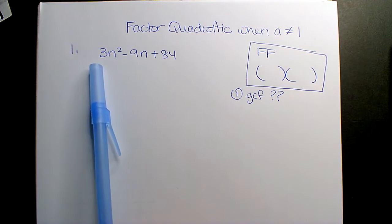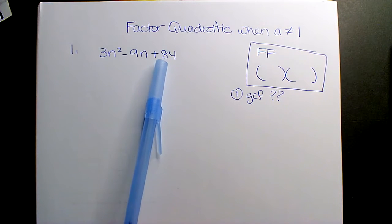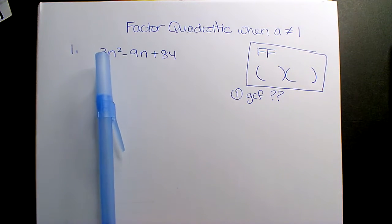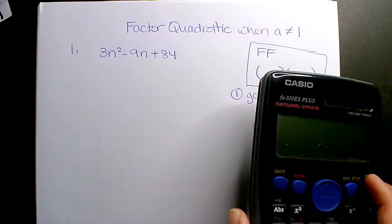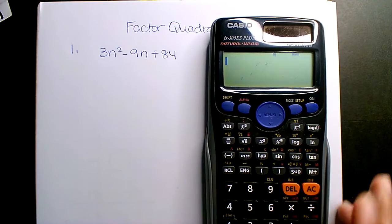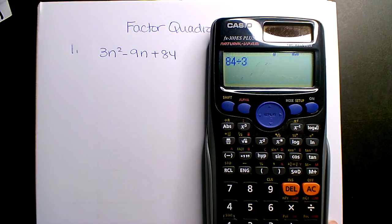Okay, 3, 9, 84. Is 9 divisible by 3? Yeah. Okay, 84 though. Some of you might be like, wait, let me divide, let me see. Okay, 84 divisible by 3. Yes, it is. It's 28, right?